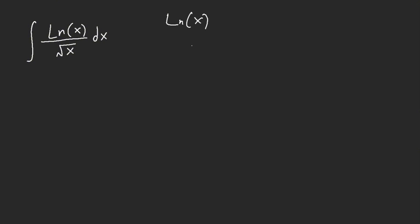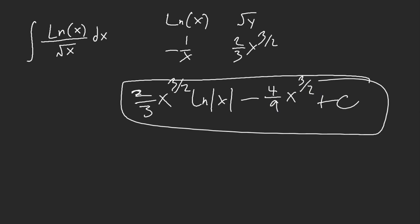This is 1/x, negative x is the square root of x, this is 3/2, 2/3. I'm like okay so this is 2/3 * 3/2 ln|x| minus, and then this is gonna be 4/9 x^(3/2) + C. And I was like done.